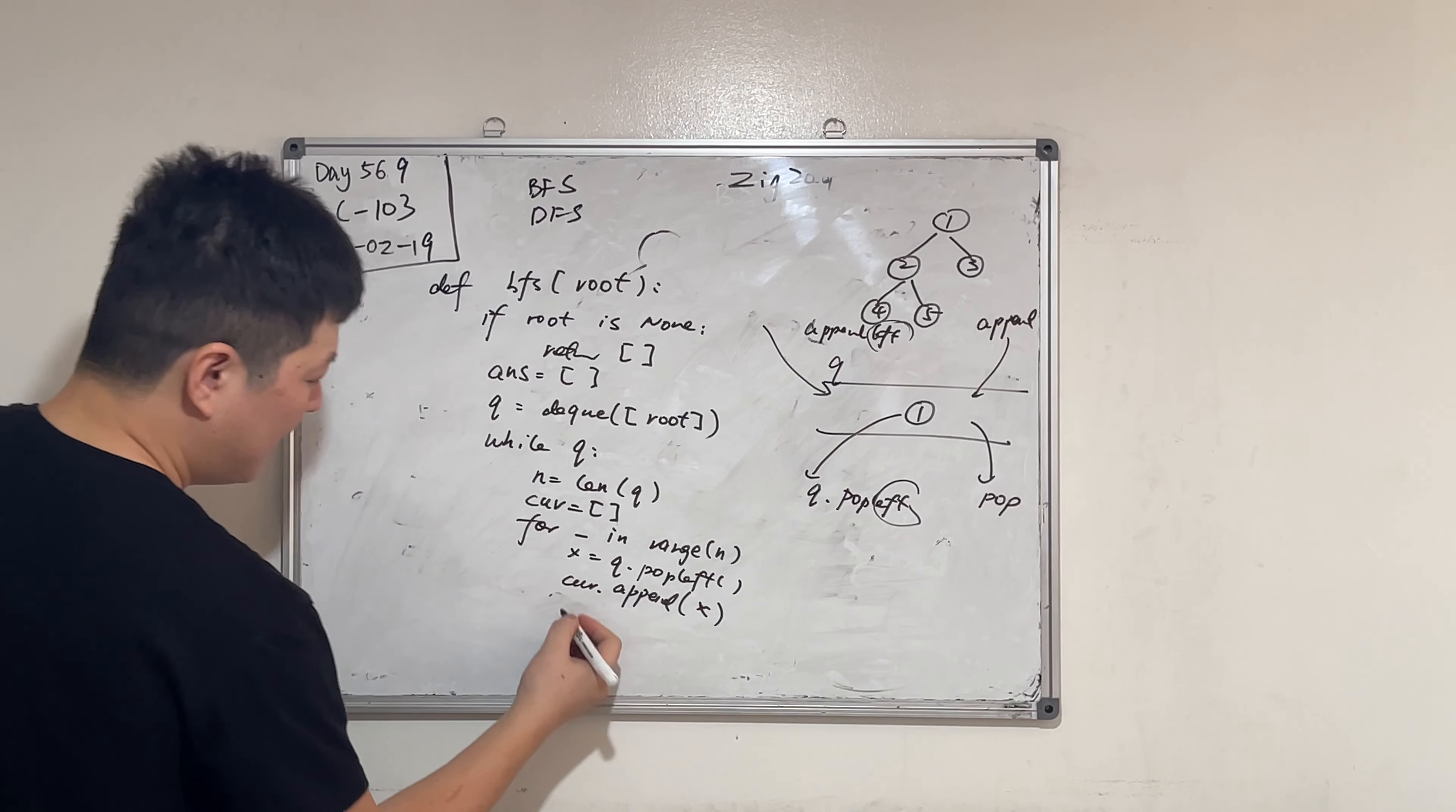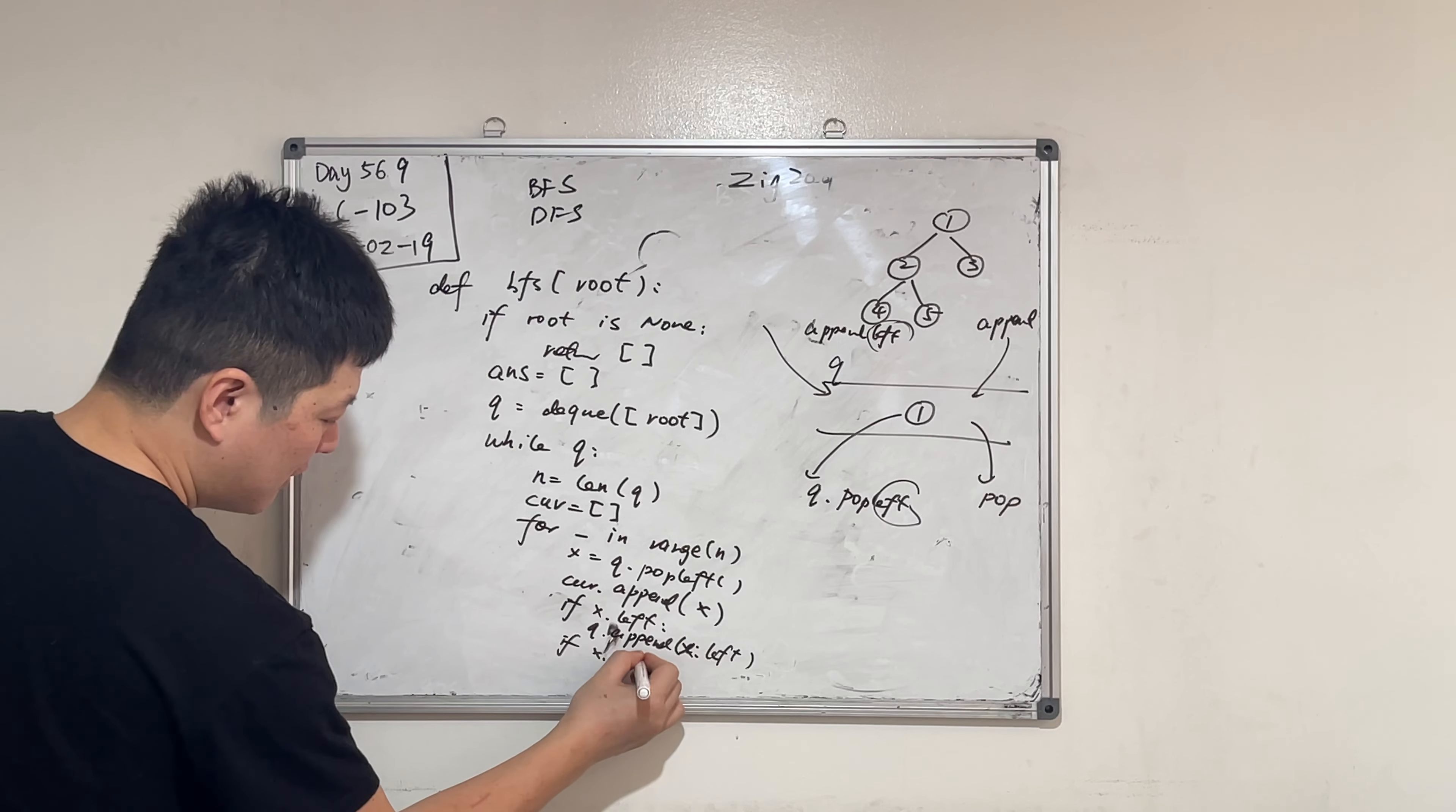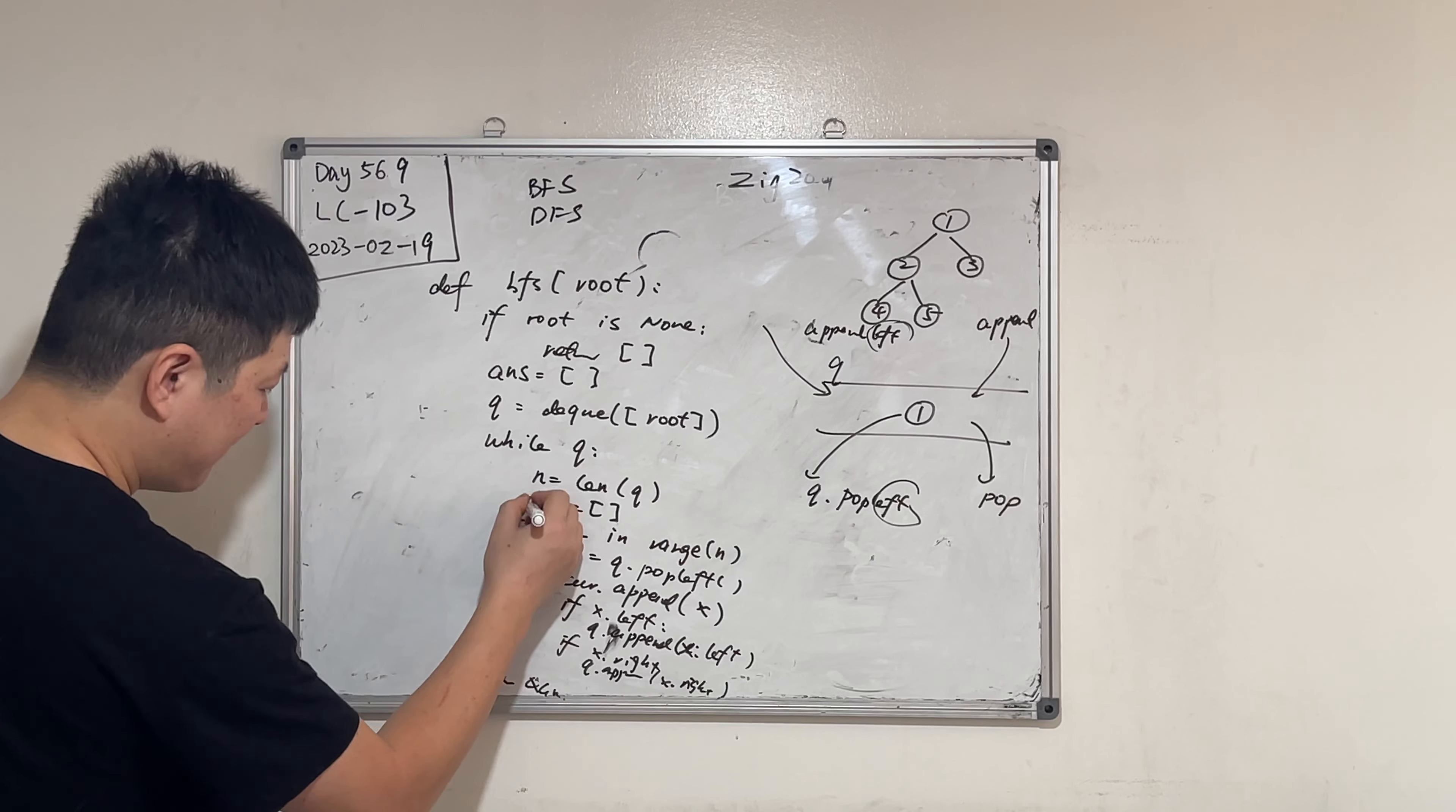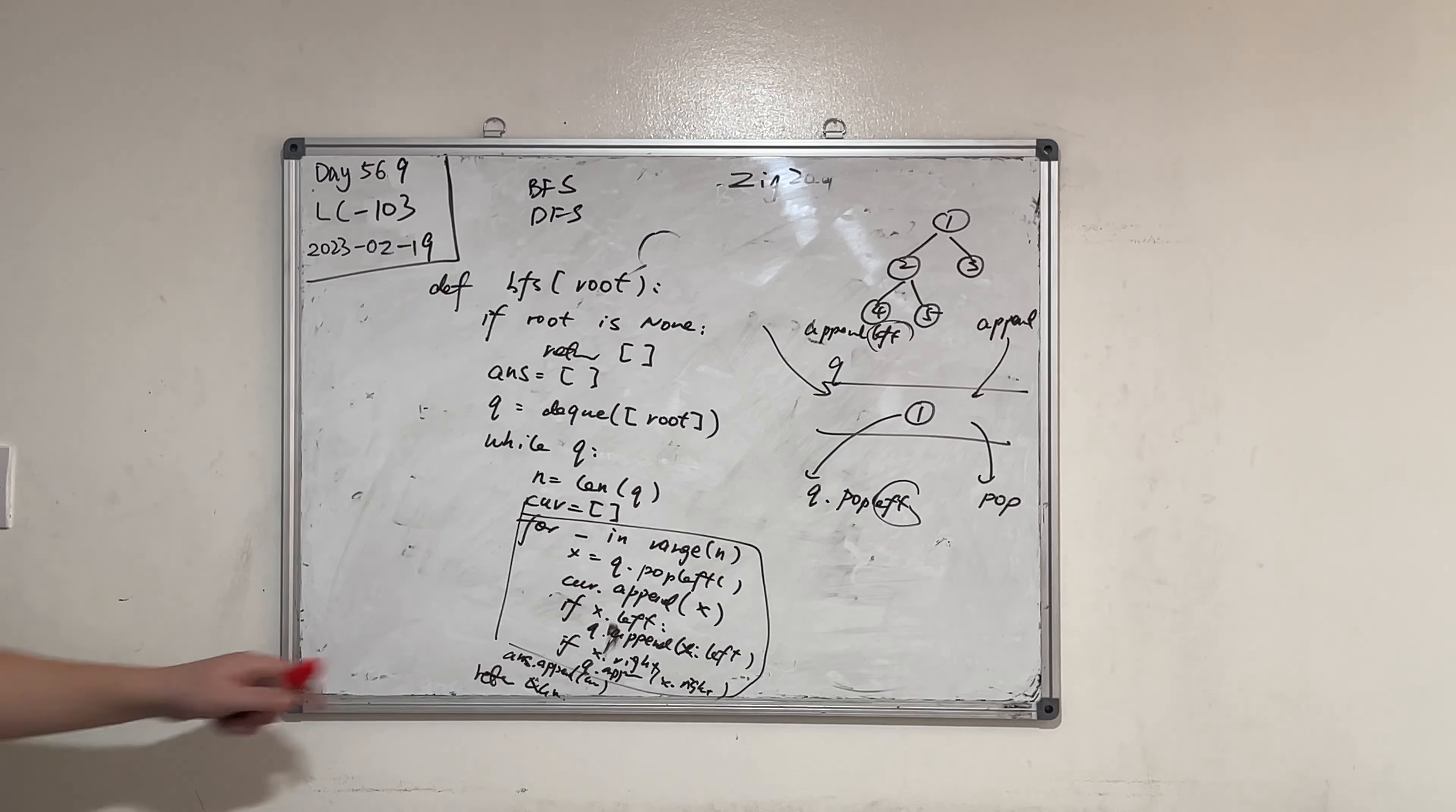Current append x, right? Then if x dot left, we have a left node. Queue dot append x dot left. And we need to do this for the same, for the right tree. If there's the right tree. Queue dot append x dot right. And return. Return. Return answer. Okay? So now we have this current, right? After this. No, we need to push it to answer. Answer append current node. Okay? Return answer.